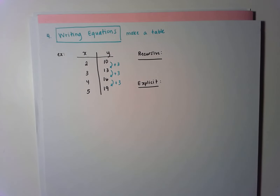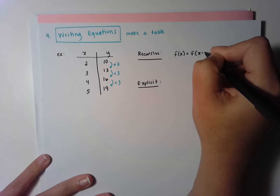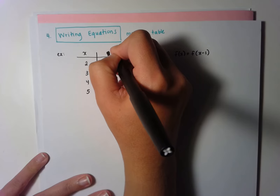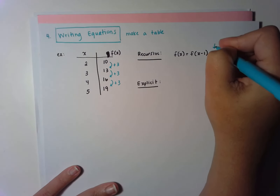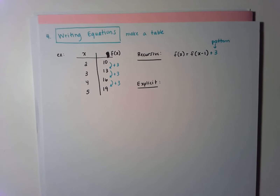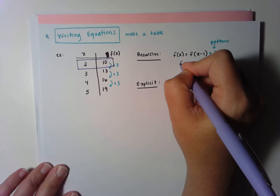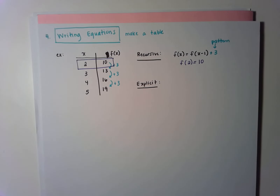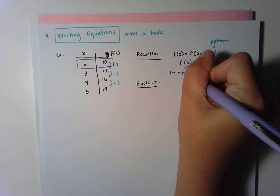For the recursive equation, it always starts the same way — I'm using black to show it's literally always the same: f of x equals f of x minus 1. Then I write the pattern, which is plus 3 here. The second required part of a recursive equation — and you have to write this down to get full credit — is the starting value. The starting value from the table is f of 2 equals 10. The 2 is the starting input and the 10 is the starting output.